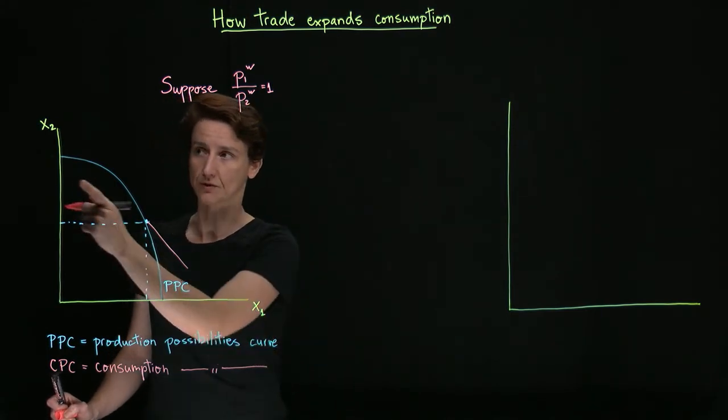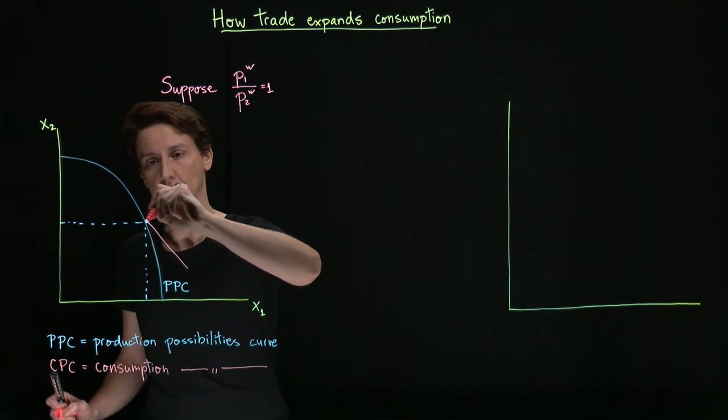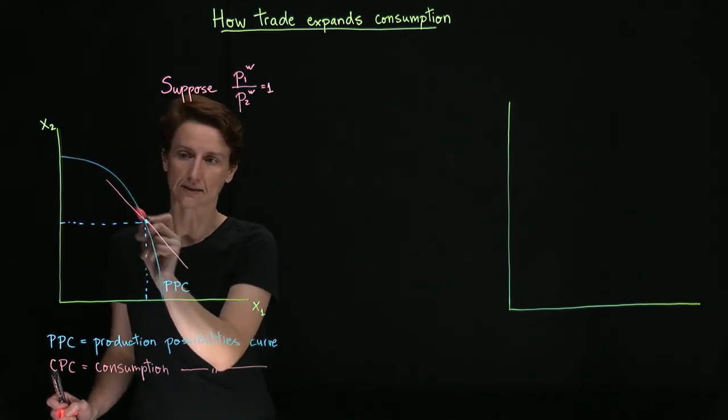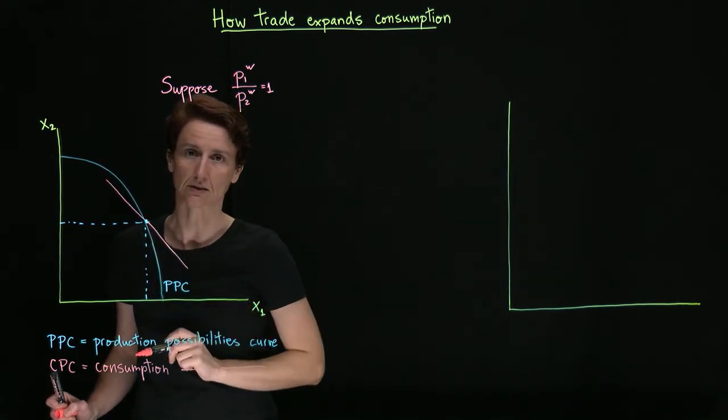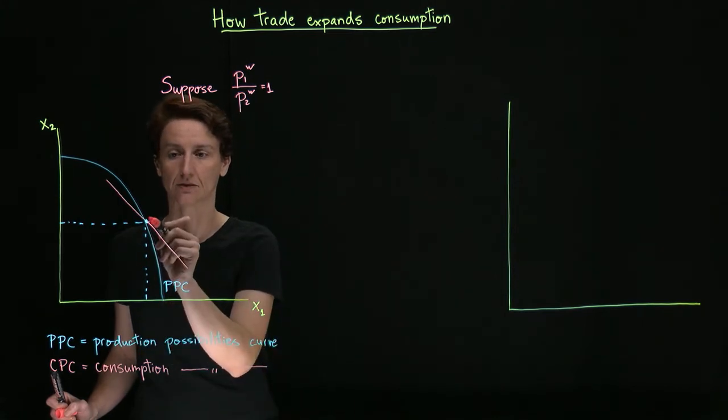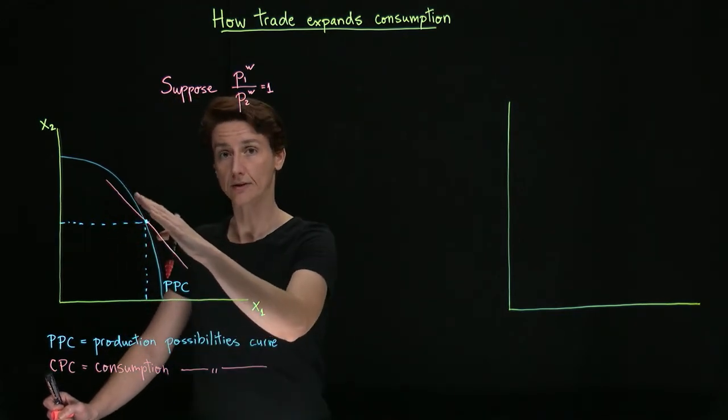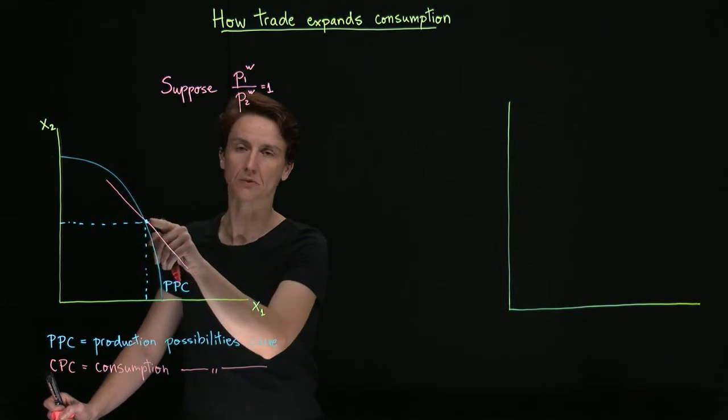If they wanted to have more of good two and less of good one, then they could also go in this direction. But notice that this is less of a good deal because it turns out that if they want to consume another unit of good two, there's a cheaper way of doing that and that is to produce it. So access to trade allows us to move consumption away from the point of production.